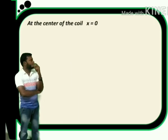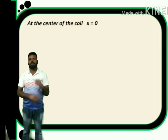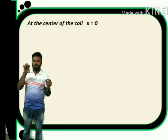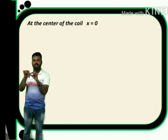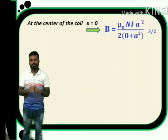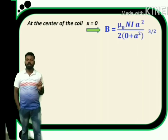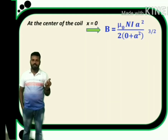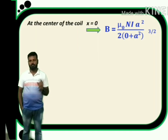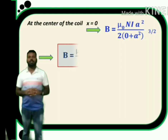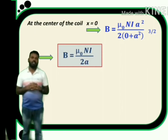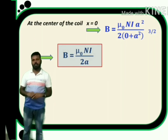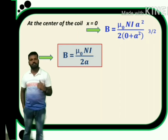There are two special cases. Case 1: what happens if the point is at the center of the coil? That means x = 0. Substituting x = 0: B = μ₀ N I a² / [2 × (a²)^(3/2)] = μ₀ N I a² / (2 a³). Cancelling a² and a³: B = μ₀ N I / (2a). This is the magnetic induction at the center of the coil.